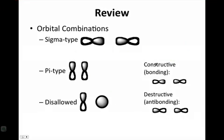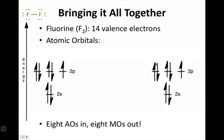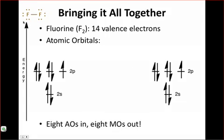So, armed with these allowed and disallowed combinations and these ideas, let's take a look at an example of diatomic fluorine. The Lewis structure of diatomic fluorine is drawn for you here in the upper left. You should notice that there are 14 valence electrons in diatomic fluorine and the atomic orbitals have been drawn out for you down here. Each line represents an orbital and each arrow represents a single electron present in the AOs of the fluorine atom.